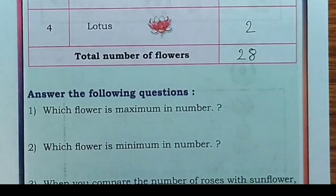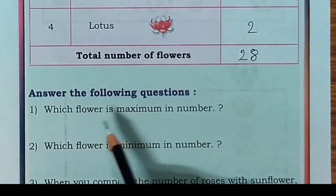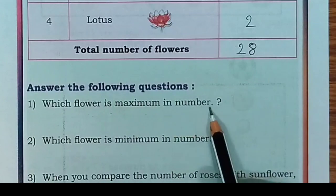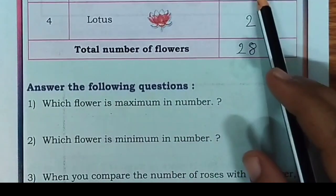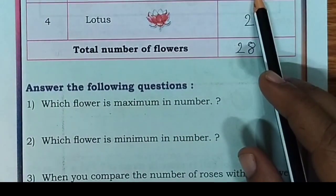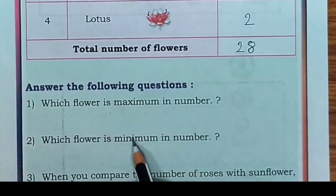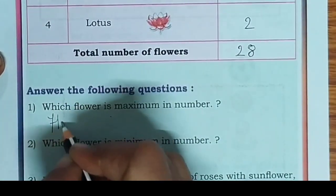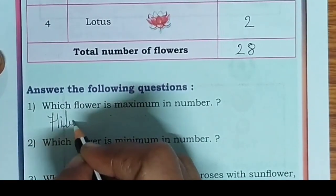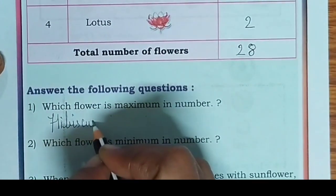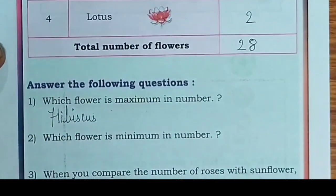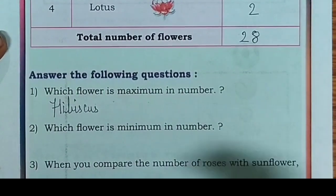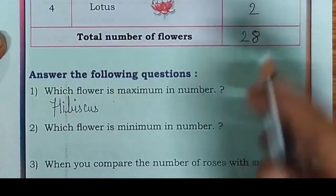Now we will answer the following questions. Which flower is maximum in number? The answer is hibiscus. Which flower is minimum in number? The answer is lotus.